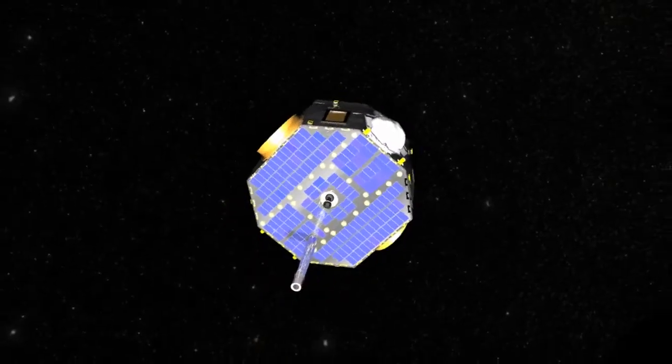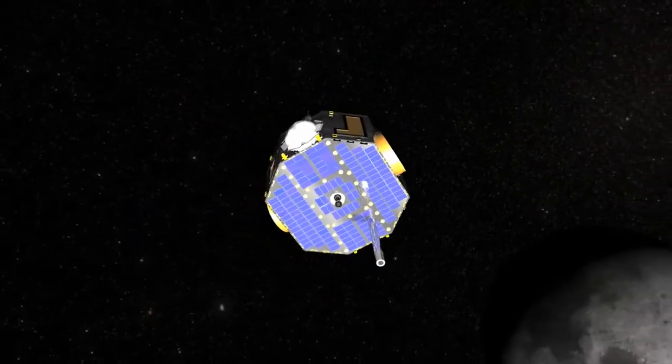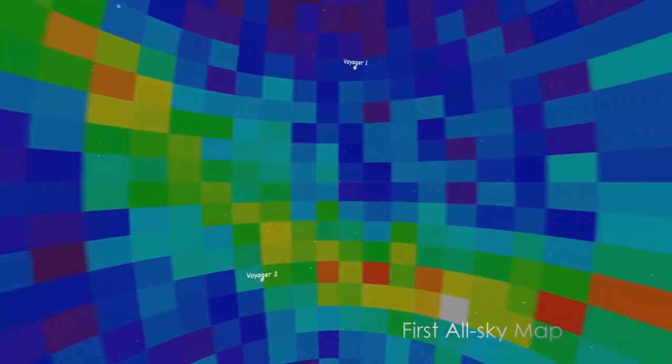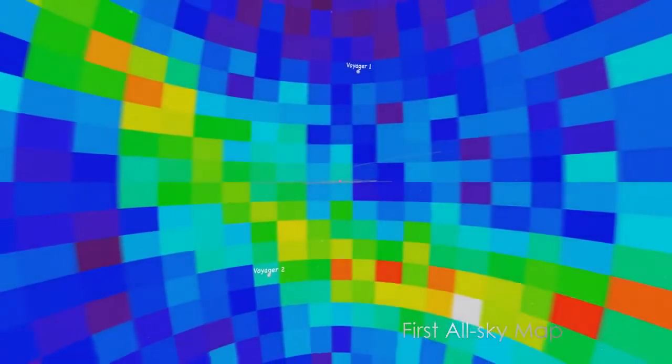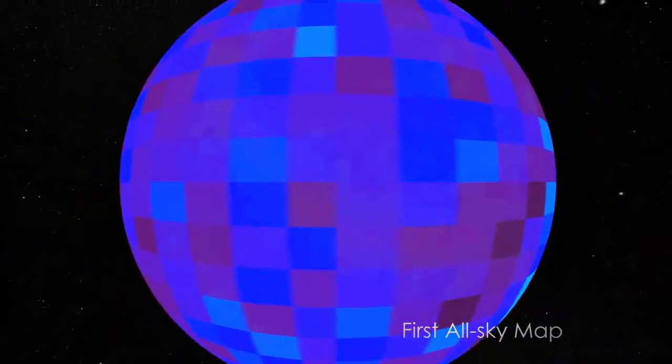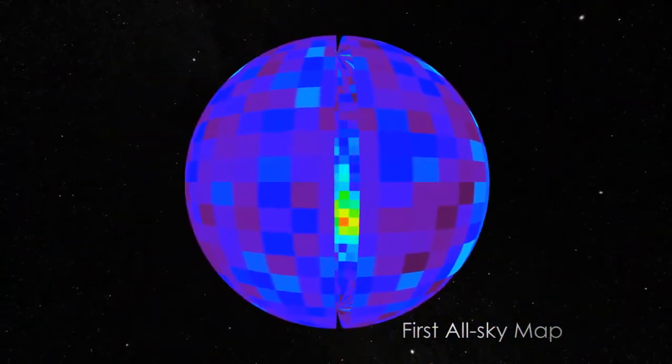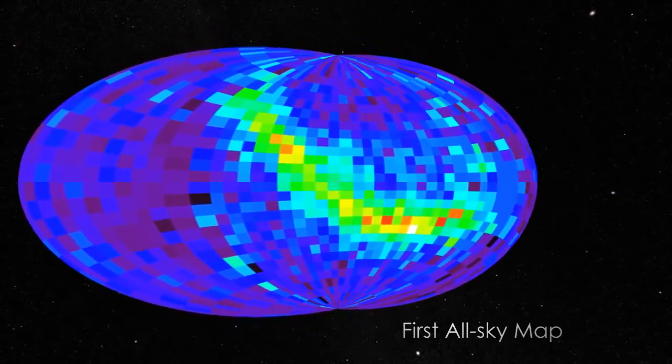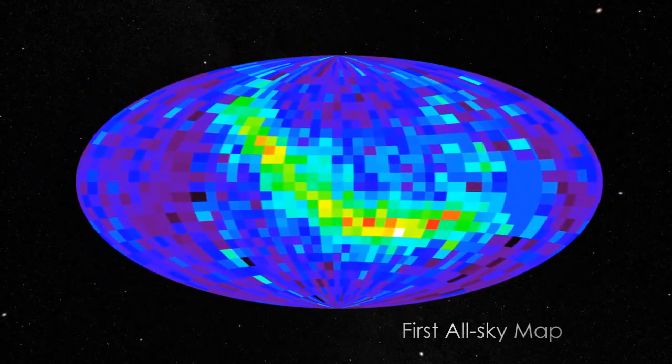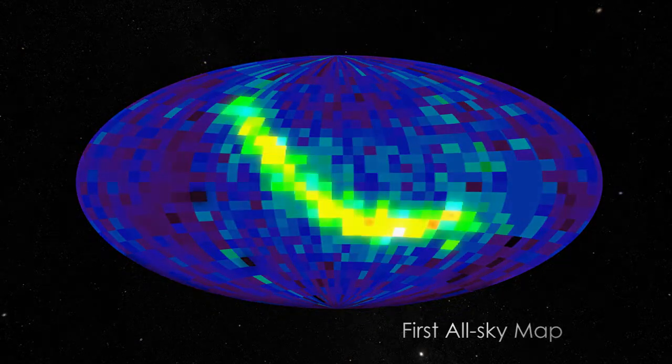During its first five years, IBEX has made some astounding discoveries. The IBEX mission science team has used data from the spacecraft to construct the first-ever all-sky map of the interactions occurring at the edge of the solar system, where the sun's influence diminishes and interacts with the interstellar medium. The most startling finding is a bright ribbon of energetic neutral atoms emanating toward the sun from the edge of the solar system.